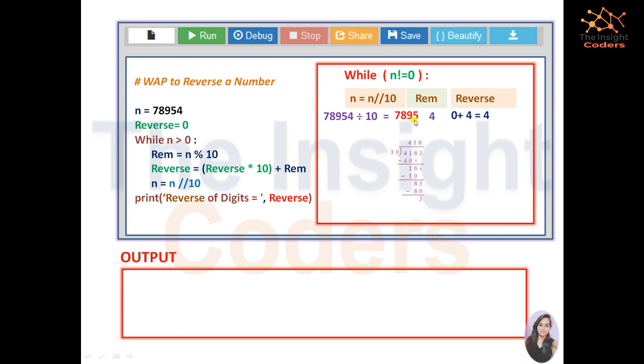So we again repeat the same work. The quotient that is 7895, this is again repeated. And whenever we divided, you must know that we get the remainder.